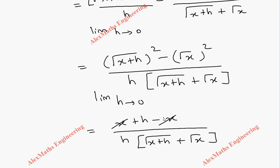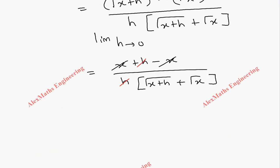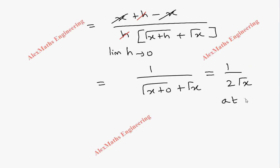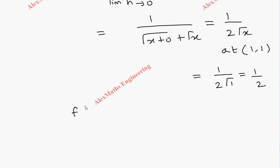We get (x + h - x) / (h · [√(x+h) + √x]). The +x and -x cancel, and then the h in the numerator and denominator cancel. Substituting the limit h → 0, we get √(x+0) + √x = 2√x in the denominator, so f'(x) = 1/(2√x). At the point (1, 1), x = 1, so f'(1) = 1/2. This is our slope m = 1/2.